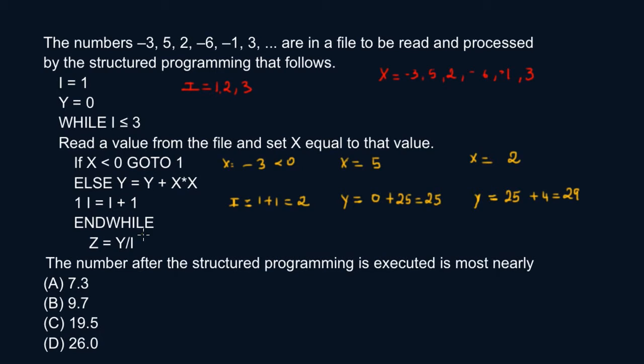So now my final result would be Z would be equal to 29, which is Y, that's my latest value of Y. And then you have to increment I. The next value of I is three plus one, that's four. So don't divide by three, divide by four because you got to increment the value of I. So that's 29 over four, and 29 over four is 7.3.